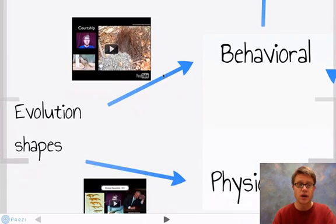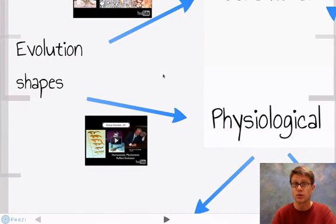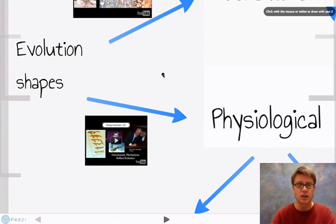And then also how evolution shapes physiological responses. So those are responses within the body. And so the two major ones I talk about in this podcast are going to be showing how our excretory system has remained the same through organisms over time, basically moving circulatory system through some kind of a tube where we create filtrate.